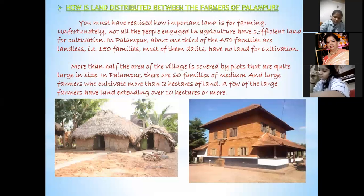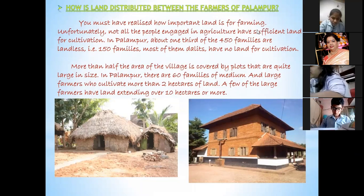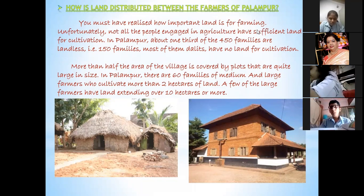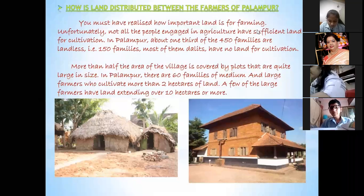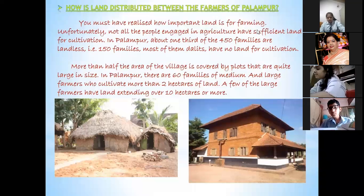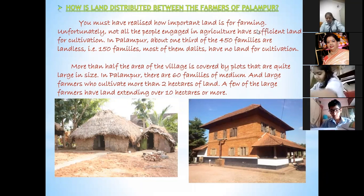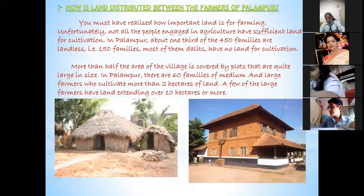Not all the people engaged in agriculture have sufficient land for cultivation. Similarly, in Palampur, one third of the 450 families — that is 150 families — are landless. Most of them are Dalits and they are not having any land for cultivation. The remaining families who own land, about 240 families, are having a small size of land that is less than two hectares. Cultivation of such small plots does not bring sufficient income to the farmer family.